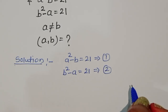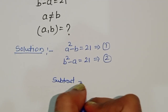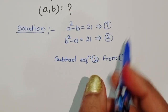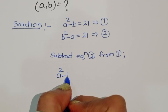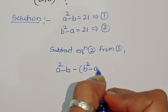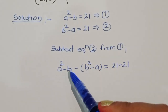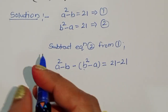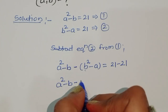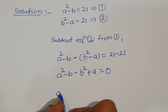We have these two equations, so we can subtract equation 2 from equation 1. Doing so, we get: (a² - b) minus (b² - a) = 21 - 21, which gives us a² - b - b² + a = 0.